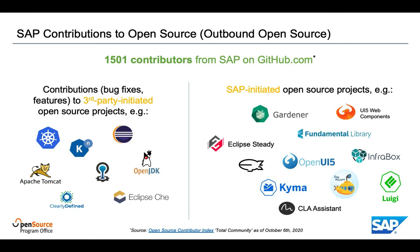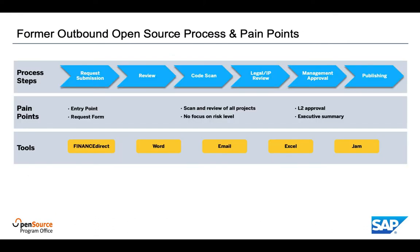Contributions in the form of bug fixes never required special approvals at SAP. Instead, we provide according guidelines to our developers and hold them accountable for adhering to these guidelines. Our development teams had to follow our outbound open source process only in cases when they wanted to contribute features or to initiate new open source projects themselves.